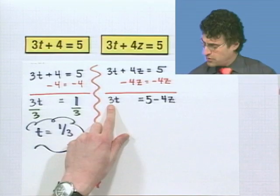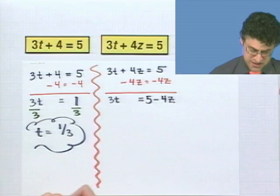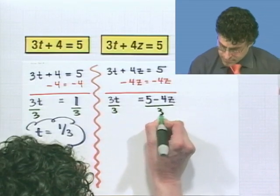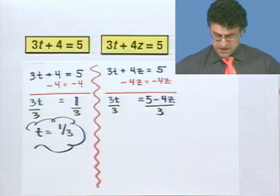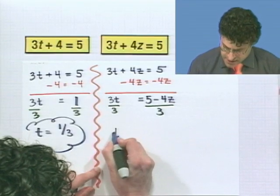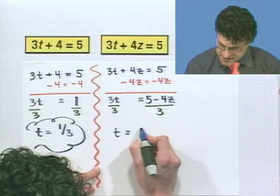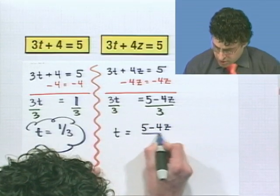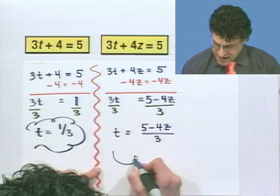Now, I want to solve for t, so I want to get t by itself, which means I should divide both sides by the 3 that's multiplying the t. And what I'm left with is 3t over 3 is just t. And on the right-hand side, I see 5 minus 4z all divided by 3. And that's the answer.